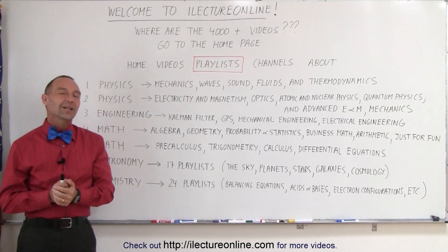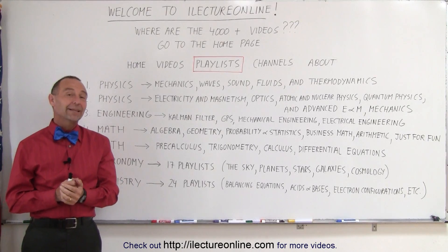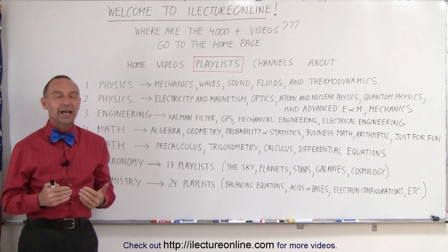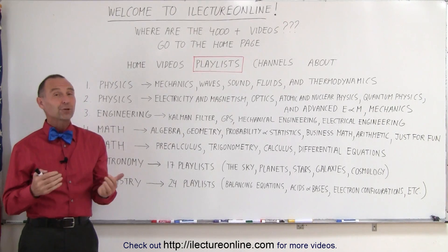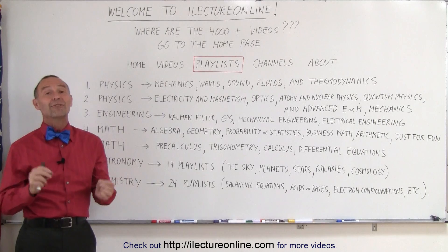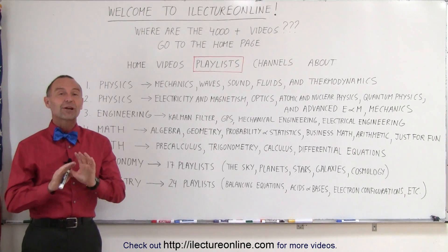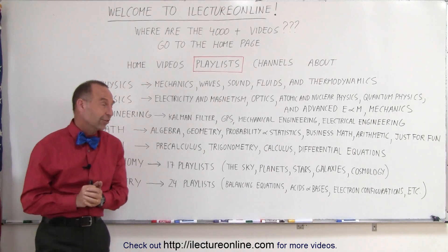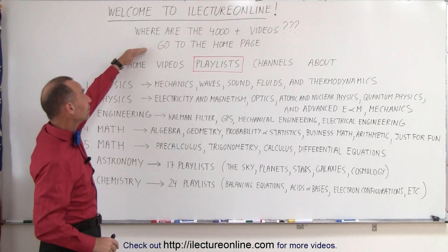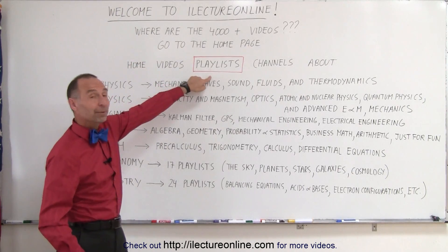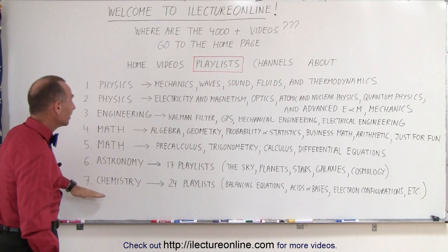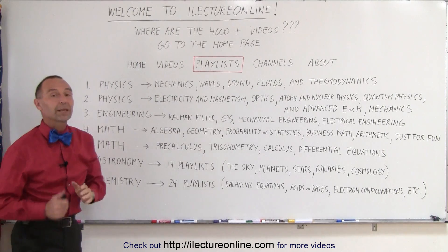Welcome to iLecturn. By now we have over 4,000 videos on the channel and a lot of viewers cannot find them. To make it easier to find them, we've tried to organize them in a set of playlists. All you have to do is go to the home page, then click on playlists and you'll have seven categories of playlists.